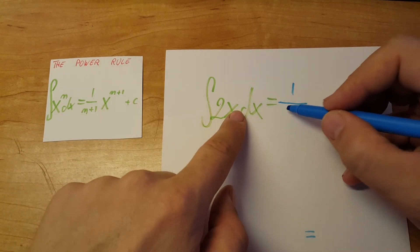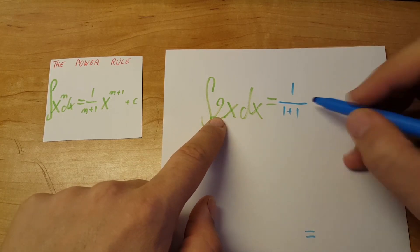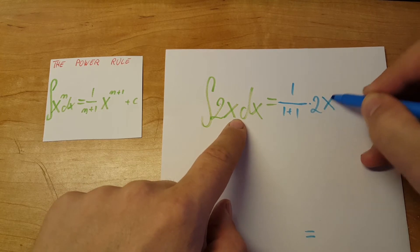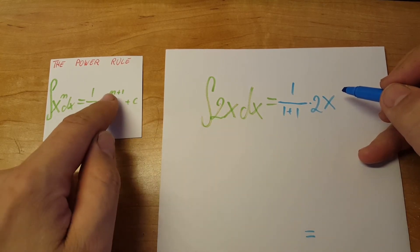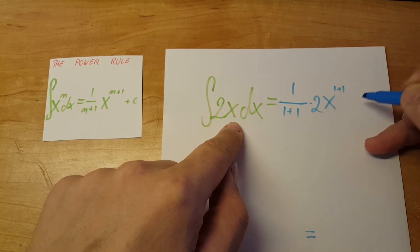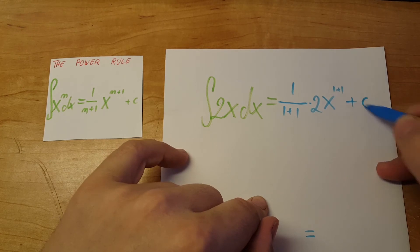Our n here is one, so one plus one. Let's not forget our number two times two our x, and x will be on the n plus one power. Our n is one so one plus one power, and we're gonna add the plus c.